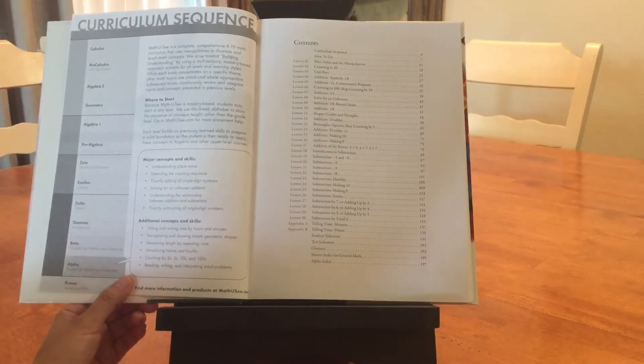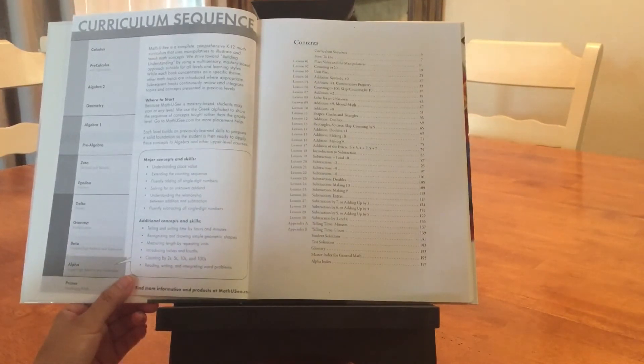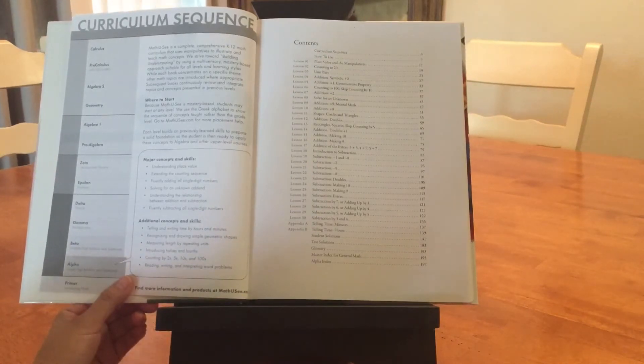You learn all the plus nines, plus eights. It also teaches shapes like circles, triangles, squares - all the different shapes, doubles in addition, and double digits.